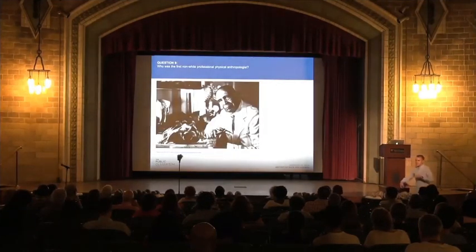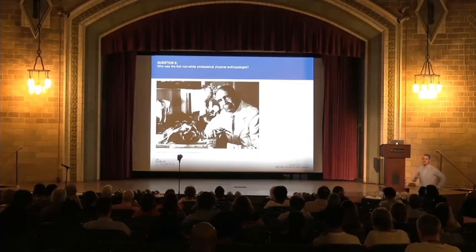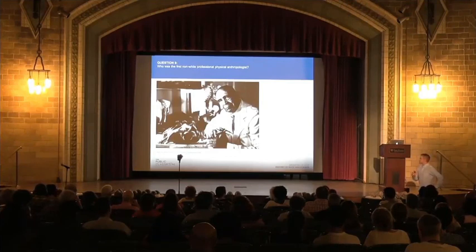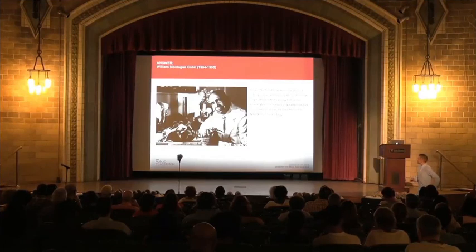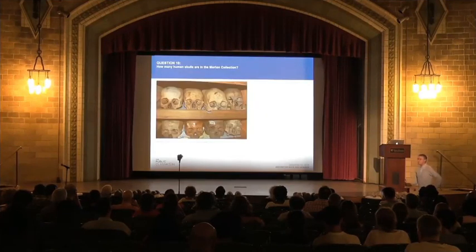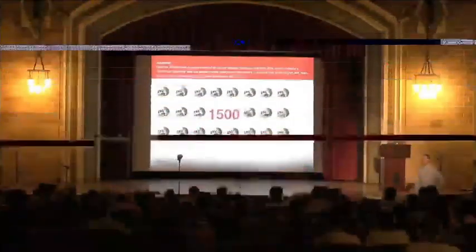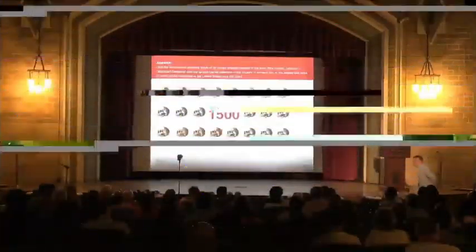Finally, question nine: who was the first non-white professional physical anthropologist — the first person to receive a Ph.D. in anthropology who would not be classified by Morton as a Caucasian? A very important fellow by the name of William Montague Cobb. He established a very large skeletal collection now at Howard University, and he was also a president of the NAACP. And the last question as a fact: how many skulls are in the Morton collection? There are 1,500 — fifty of which you see here. It was known as the American Golgotha. With that, I welcome you to this evening's discussion by turning the floor over to the museum director, Dr. Julian Segers.